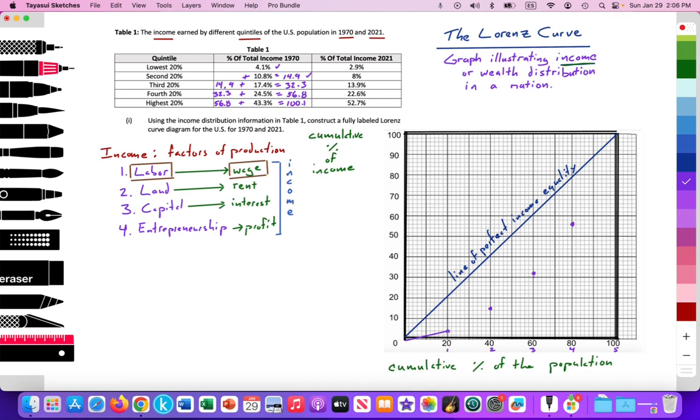So let me go ahead and do that. Here is the Lorenz curve for the United States in 1970. And I'm going to label that curve A. The 1970 curve is this curve A. It's relatively far from the line of perfect income equality. But let's see over a 40-year period, 41-year period from 1970 to 2021, is it getting better or not? Unfortunately, it's not. So let's go ahead and plot that.